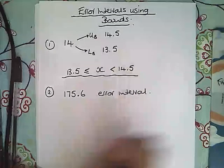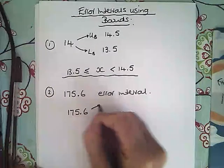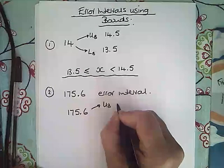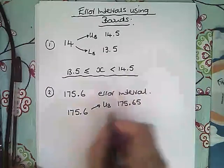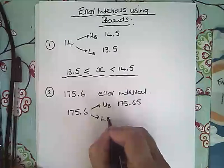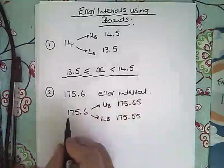First of all, I think about my upper and lower bounds. So I write 175.6. My upper bound would be 175.65. My lower bound would be 175.55. That lies in the middle of it.